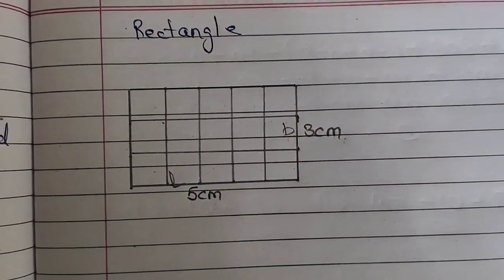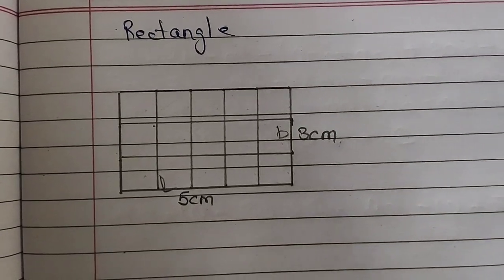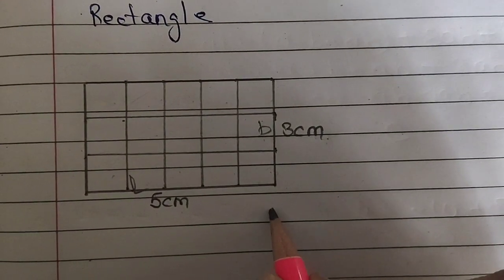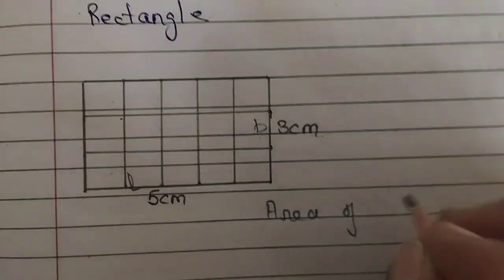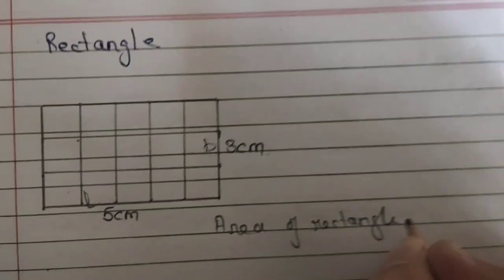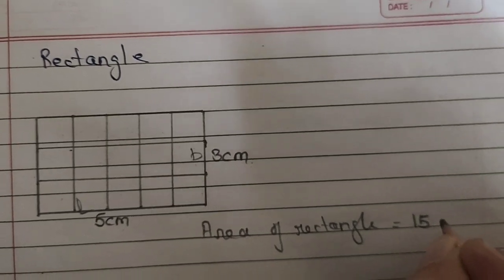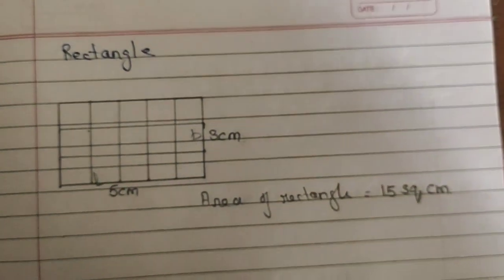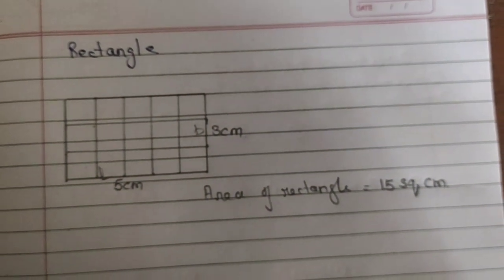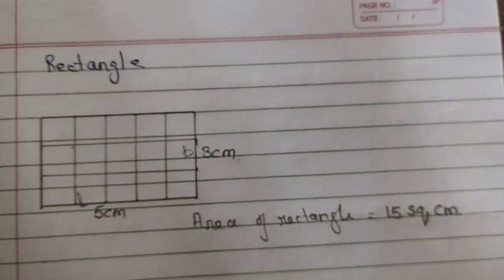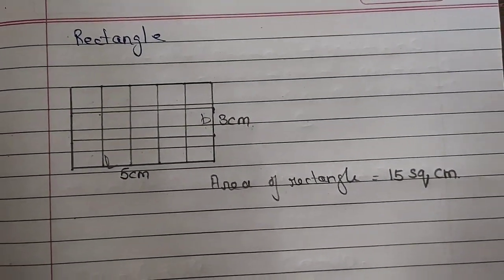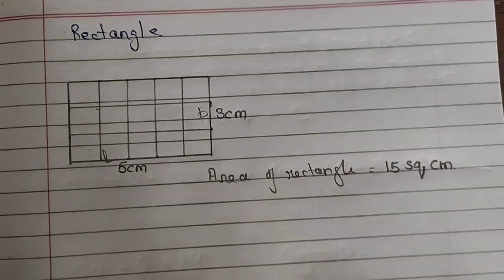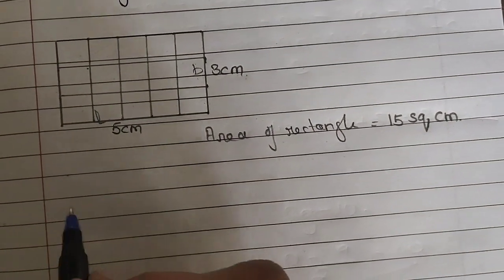There are 15 squares, so the area of this rectangle is 15 square centimeters. Now if you want to find the area of the rectangle using a formula, the formula for finding the area of a rectangle is: